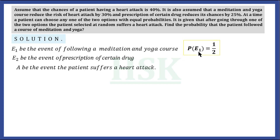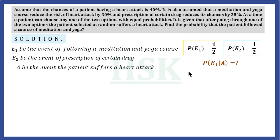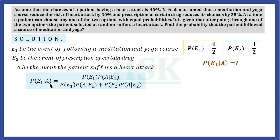Since there are equal probabilities that either option can be selected, the probability of E1 — that is, the probability of following a yoga course — would be 1/2, and the probability of E2 — using a prescription of a certain drug — would also be 1/2. We require the probability of E1 given A. Using Bayes' theorem, this can be written as: P(E1) × P(A|E1) divided by P(E1) × P(A|E1) plus P(E2) × P(A|E2).